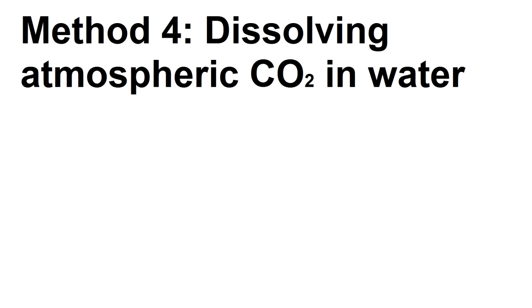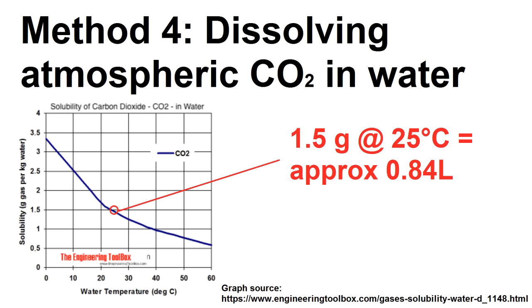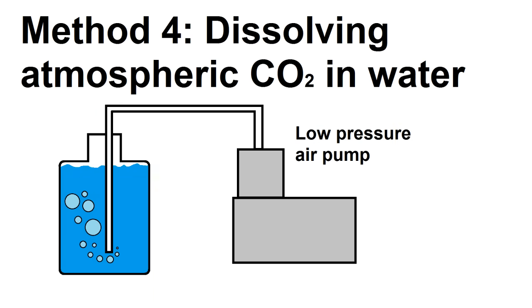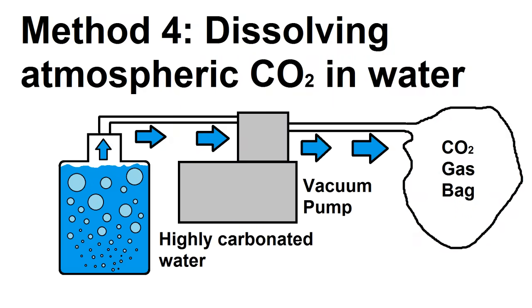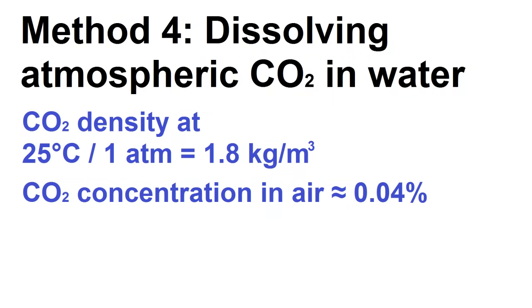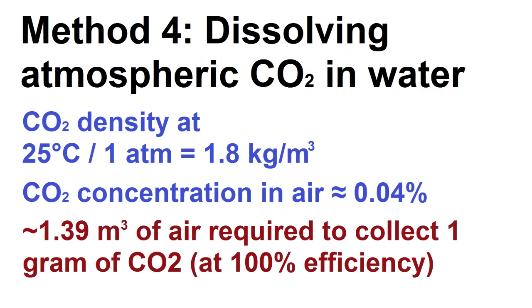Method 4: Dissolving atmospheric CO2 in water. A liter of water can hold about a liter of dissolved CO2 gas at room temperature. Once the gas is dissolved, it could easily be removed by pulling a vacuum on the water. The only problem here is it requires a massive volume of air to be bubbled through a given amount of water because of the extremely low concentration of CO2 in the air.